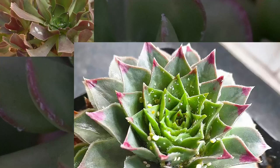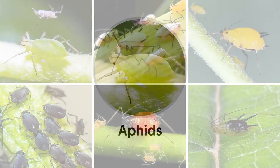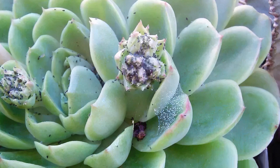Secondly, aphids. They have teardrop-shaped bodies. Aphids will cause the plant to have misshapen leaves and retard growth.